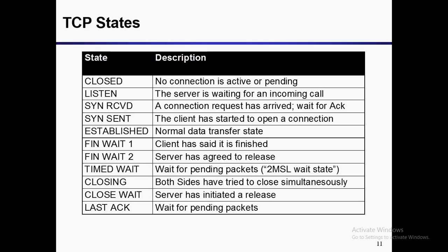Now let's talk about TCP states: CLOSE, LISTEN, SYN-RECEIVED, SYN-SENT, ESTABLISHED, FIN-WAIT-1, FIN-WAIT-2, TIME-WAIT, CLOSING, CLOSE-WAIT, and LAST-ACKNOWLEDGEMENT. Each of these states determines the quality of the TCP connection — whether the connection is active or pending, whether the server is waiting for an incoming connection, whether a connection request has arrived waiting for acknowledgement, whether the client has started to open a connection, normal data transfer, or whether both sides have tried to close simultaneously.